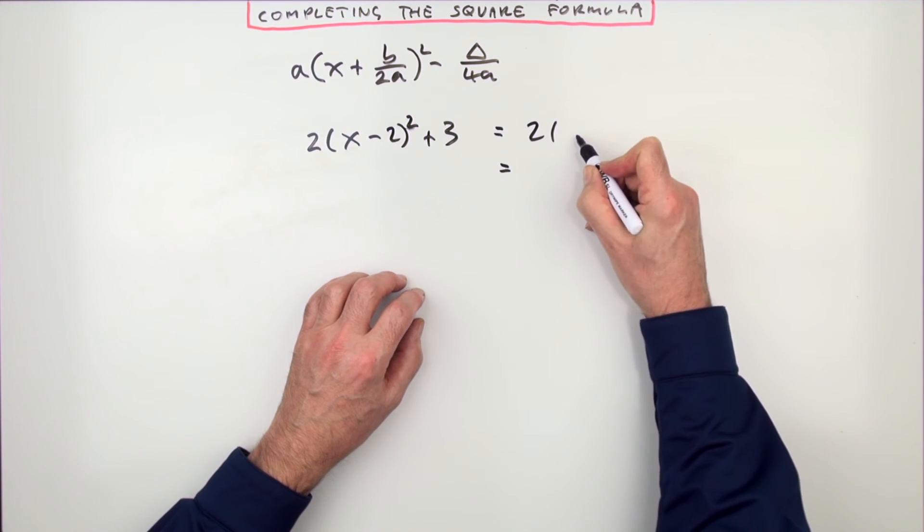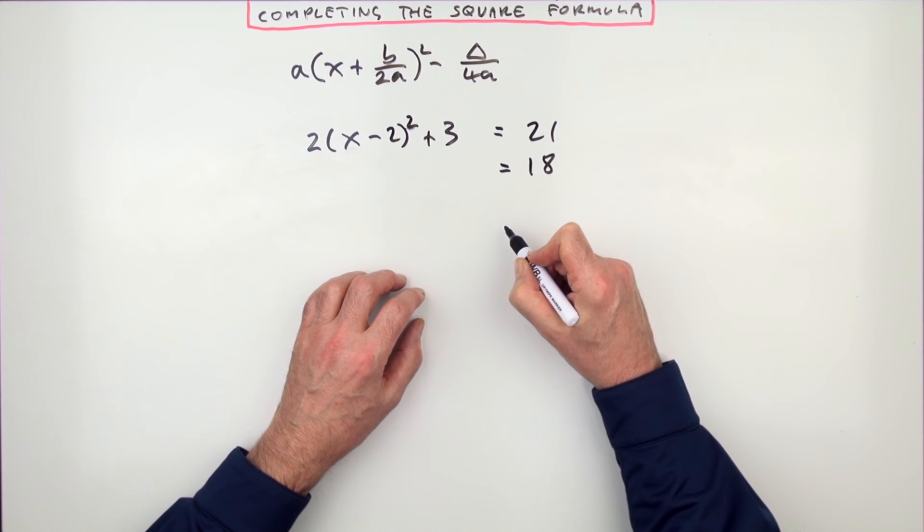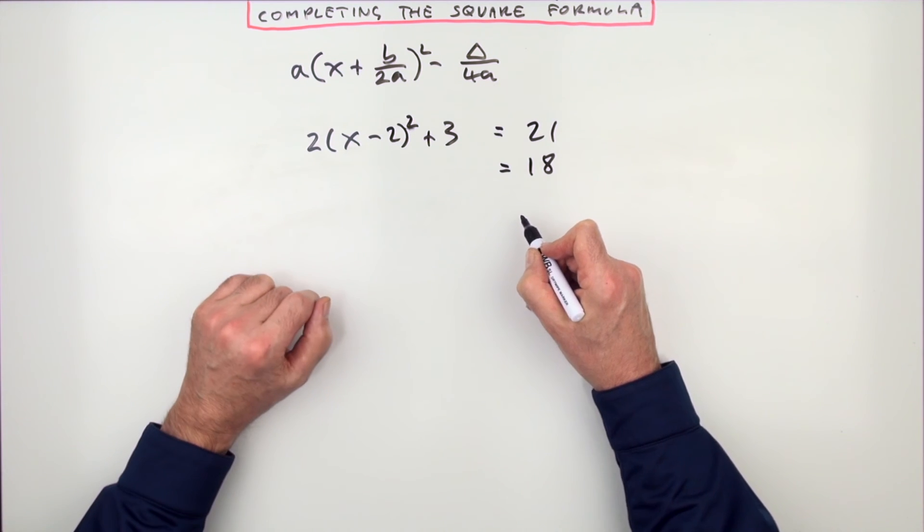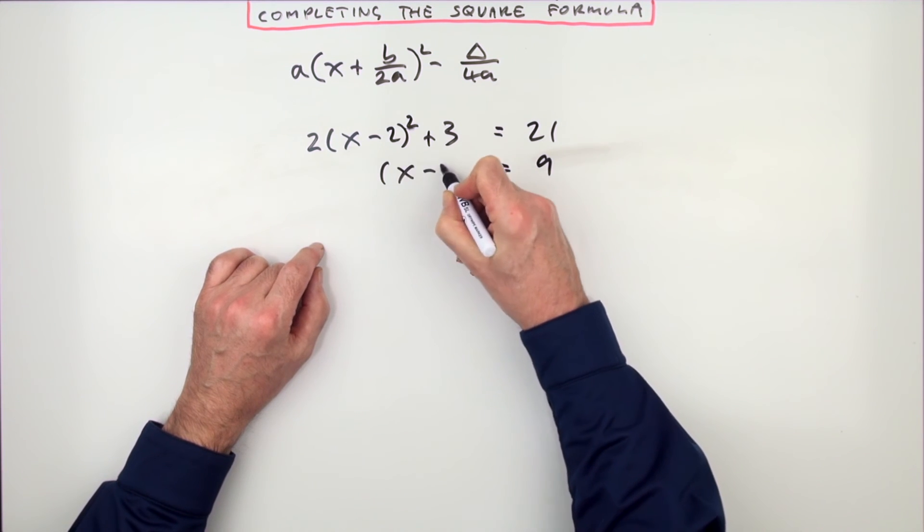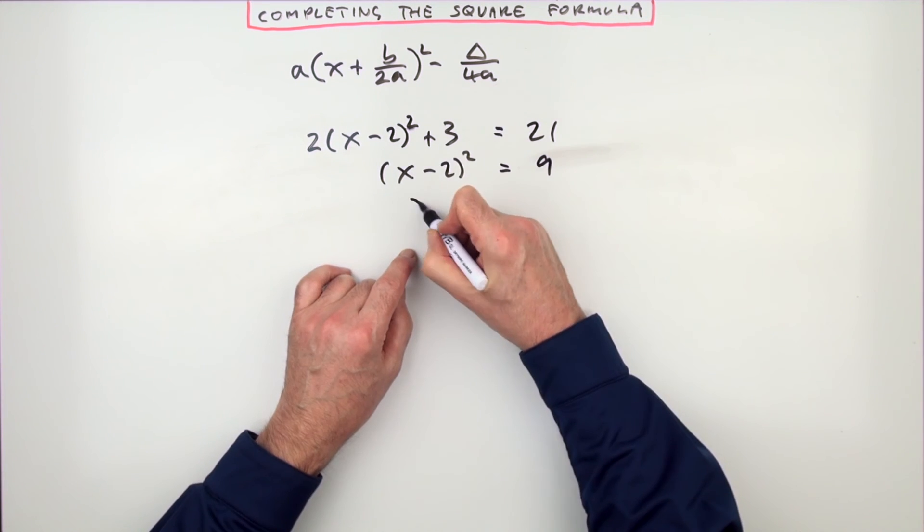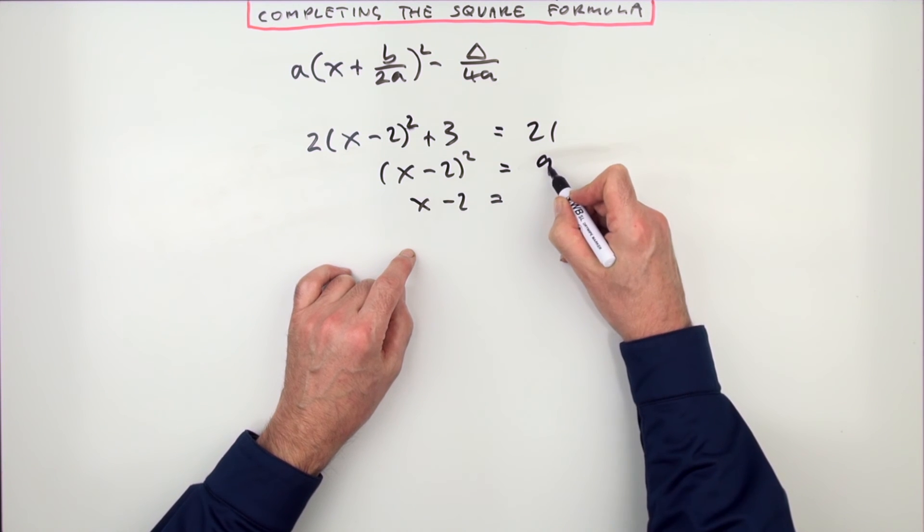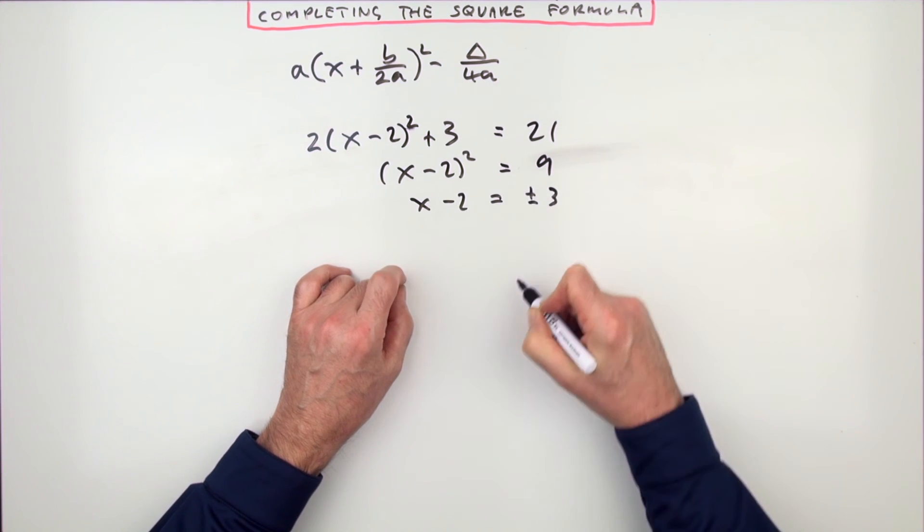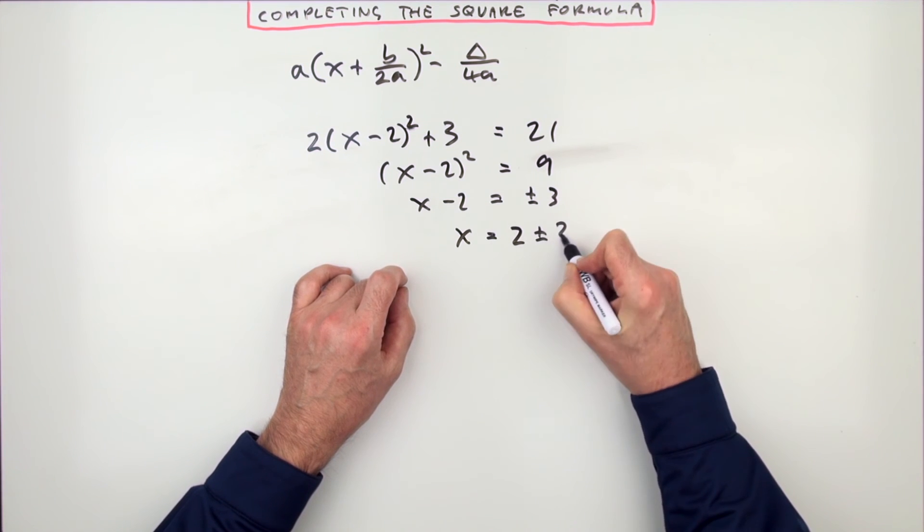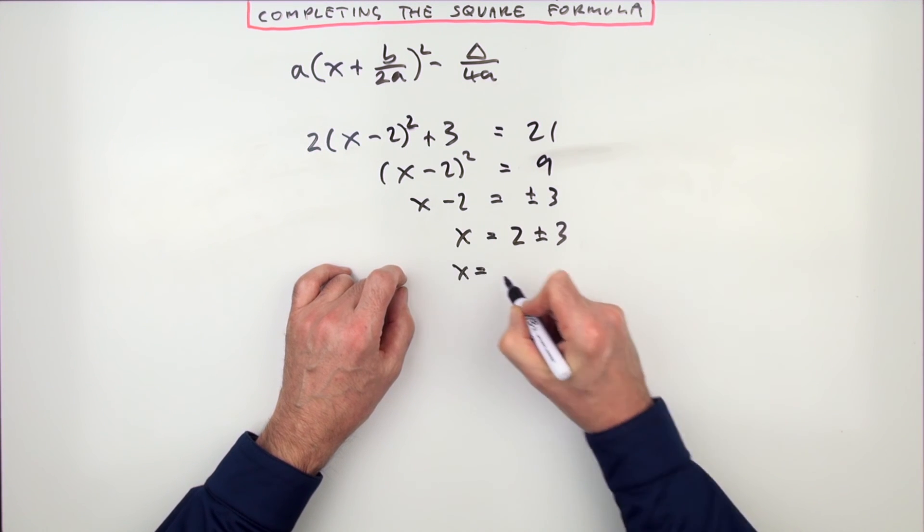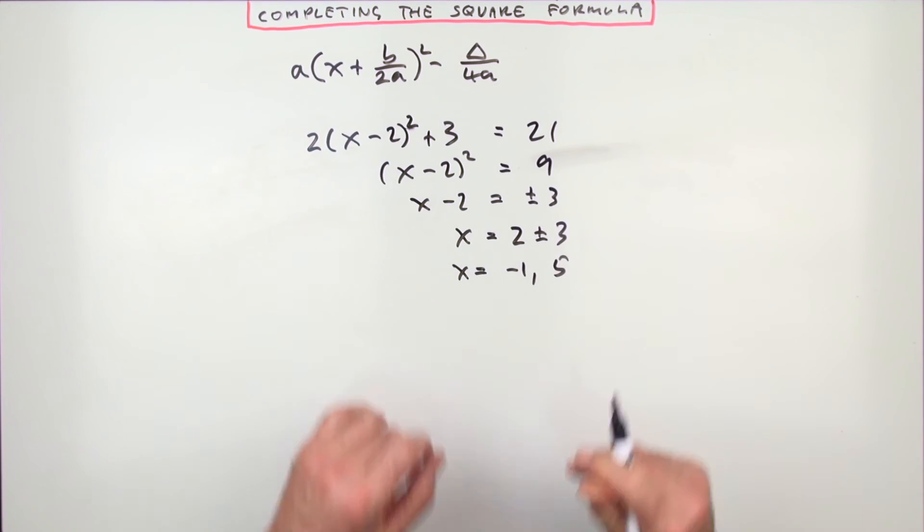Take away the 3. Take 3 away from this side, you're down to 18. Take that 2 across and you're down to 9. I'll just do those two steps in one. So now you've got x minus 2 squared is 9. Do the square root. So x minus 2 will be the square root of 9 is 3, but it could be positive or negative. And finally, take that across as an add 2. 2 plus or minus 3, which gives you two solutions. 2 take away 3, negative 1. 2 plus 3, 5.